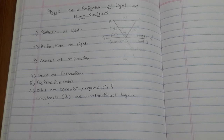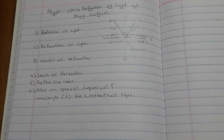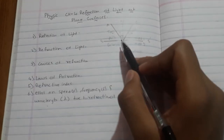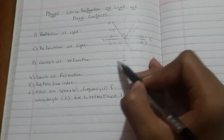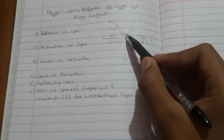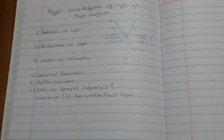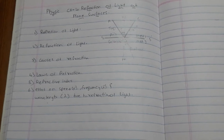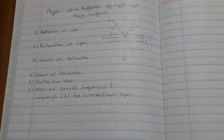Now we will understand refraction of light. The change in direction of the path of light when it passes from one transparent medium to another is called refraction of light. For example, take medium one as air and medium two as glass. In air the passage of light is fast, but when it enters glass it slows down.